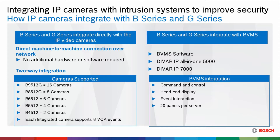We also have the ability to integrate our cameras through our BVMS software, which is the Bosch Video Management System. That can be accomplished either through our server-based software or through some of our DVARs — our DVAR IP All-in-One 5000 and our DVAR IP 7000. What this provides us is command and control. We can actually arm and disarm the alarm panel and activate doors right from the video management display.